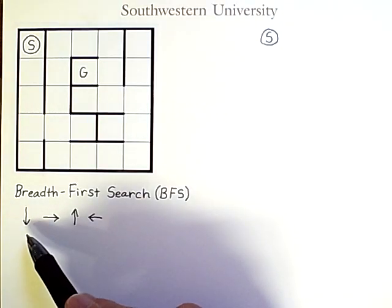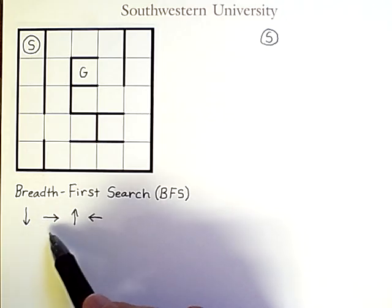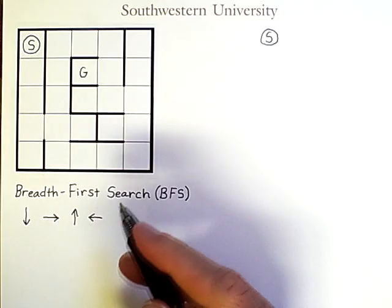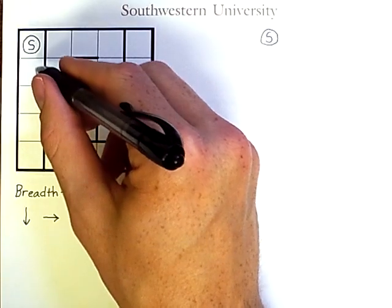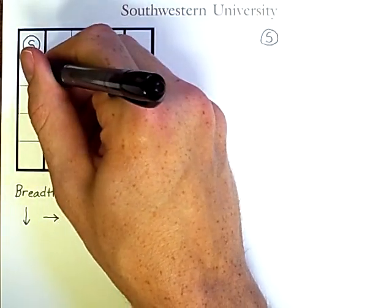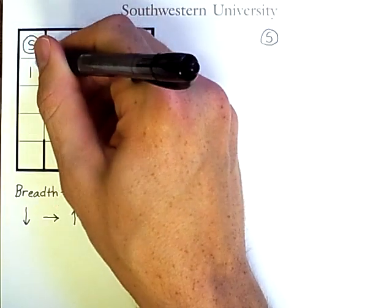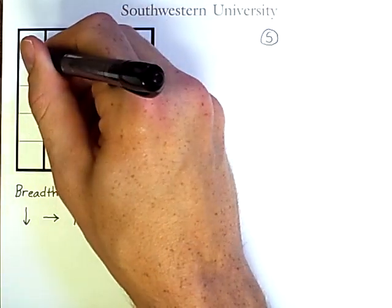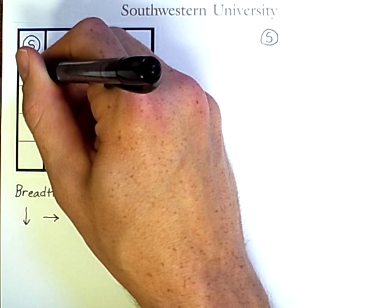Now, as before, we will check successors in the order down, right, up, left. Now, from the first few states, there isn't going to be much difference from Depth First Search. There's only one option from the start and so it will be the first node we check.